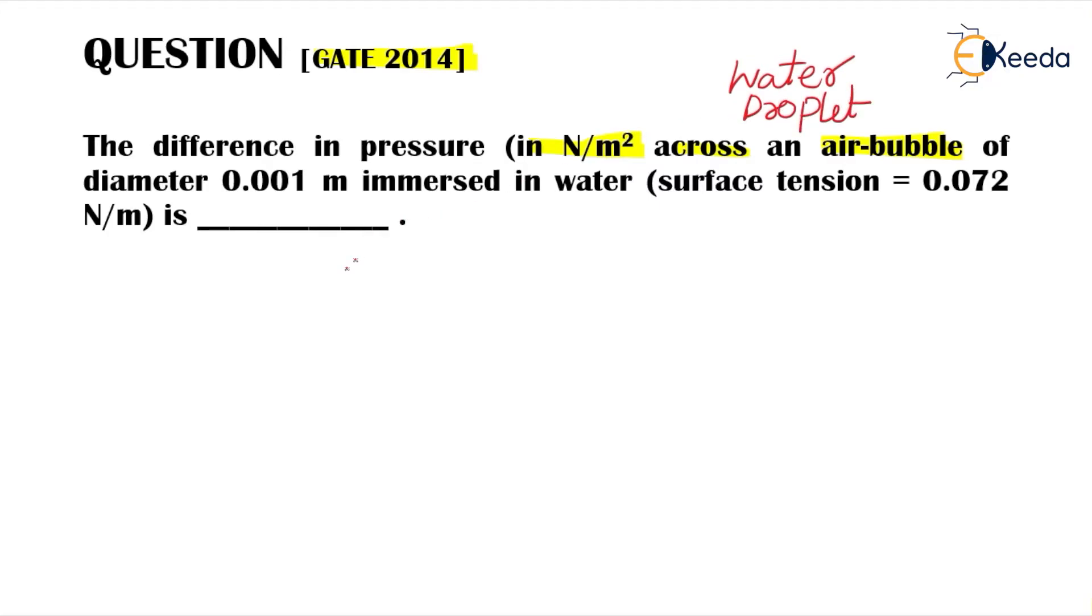So what was the expression for this? Delta P equals 4 Sigma S by D, because here diameter is given so we will remember in this manner.